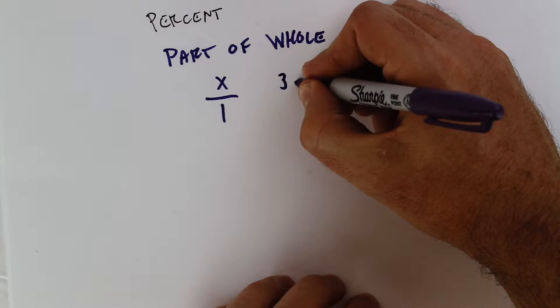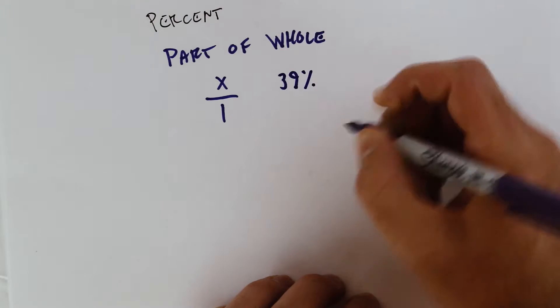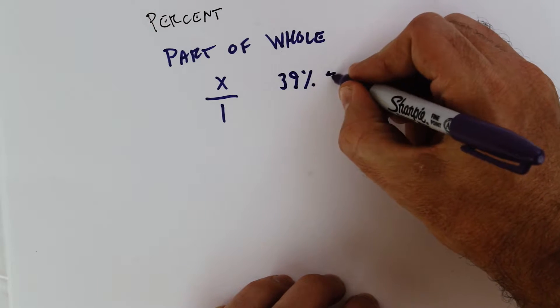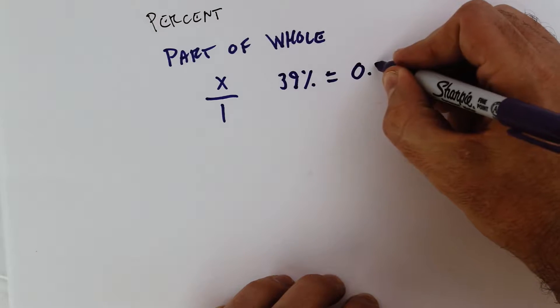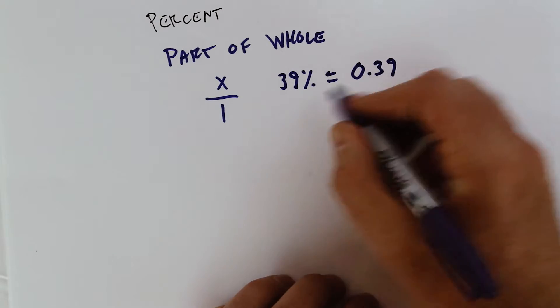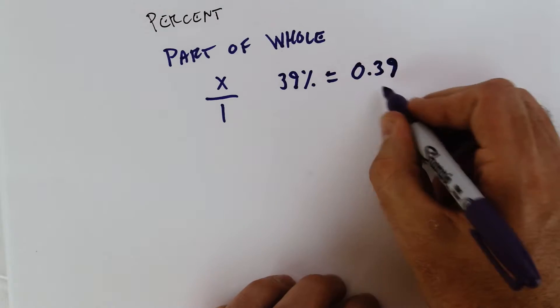And we can have percents written two ways, like this, 39% with that percent symbol, or in a decimal form. Those are equivalent. 39% equals 0.39.